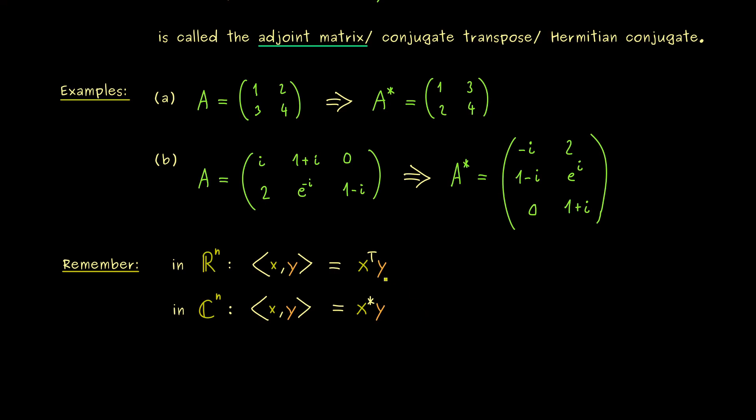And again, you can see it as a matrix product where the result is a complex number. So I would say this makes your life easier to remember the standard inner product in R^n and in C^n. However, please don't forget this is the standard inner product, so there are also other possibilities to define so-called inner products.